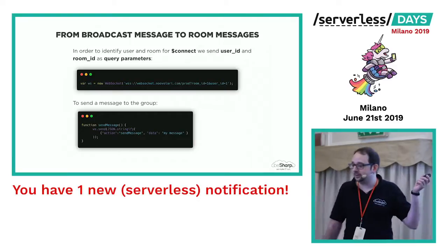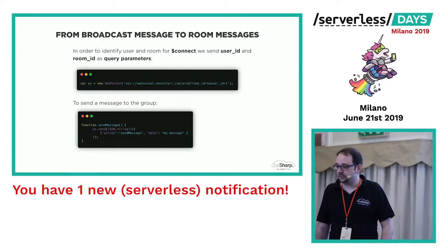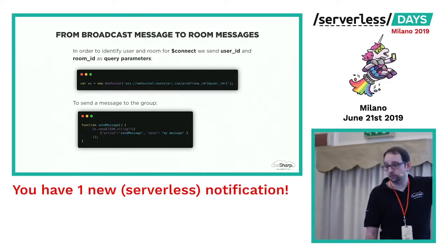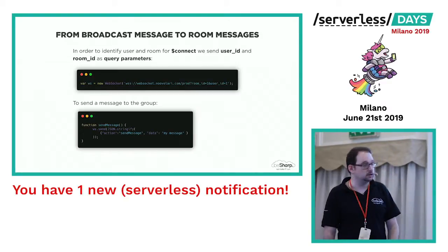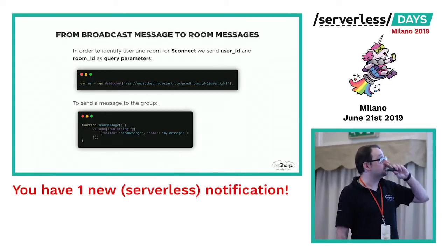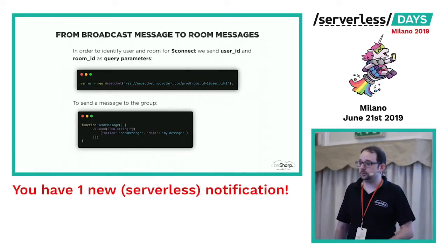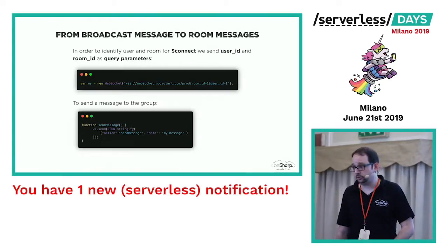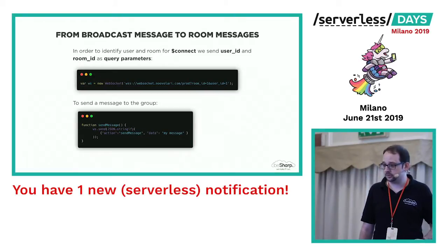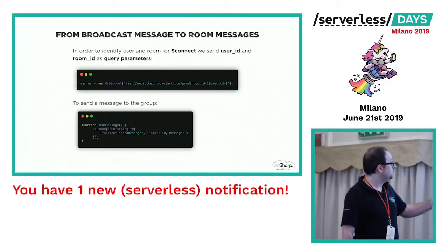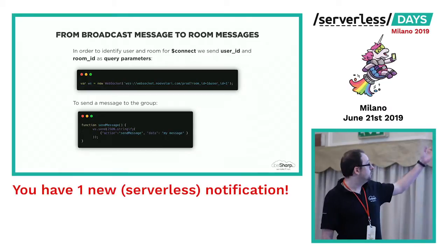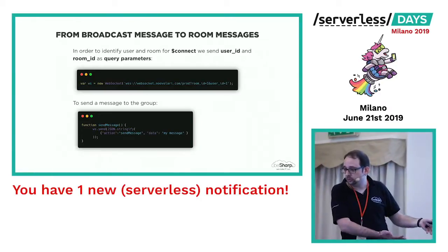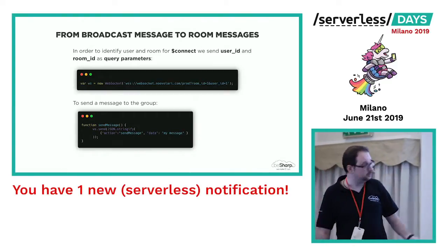This is the code you need to use in your clients — just a couple of lines of code. With the first line, you create a new JavaScript WebSocket object by passing the custom domain name, for example websocket.nuvolari.com. You also add a stage value, but it's optional. You pass the information for the connection as query parameters. This is a problem in the sense that later we want to encrypt this information, because now they are clear — this is the only way to pass information for a connection, because WebSocket doesn't support custom headers. To send a message, you just call a simple JavaScript function with a JSON structure. You can see the action value: sendMessage, which is the name of the route to call, and then the simple message you want to send.